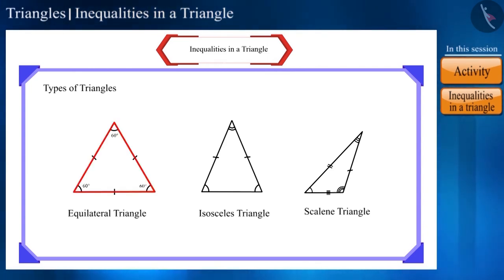We know that in an equilateral triangle, all three sides and angles are equal. In an isosceles triangle, two angles and their opposite sides are equal. And in a scalene triangle, the measure of the three angles and the length of the three sides are unequal.